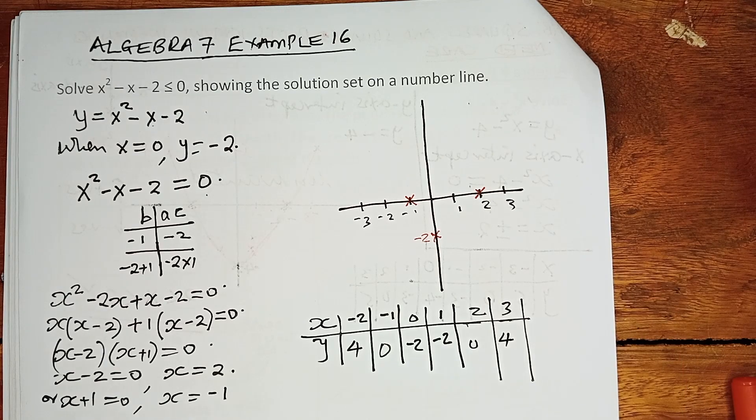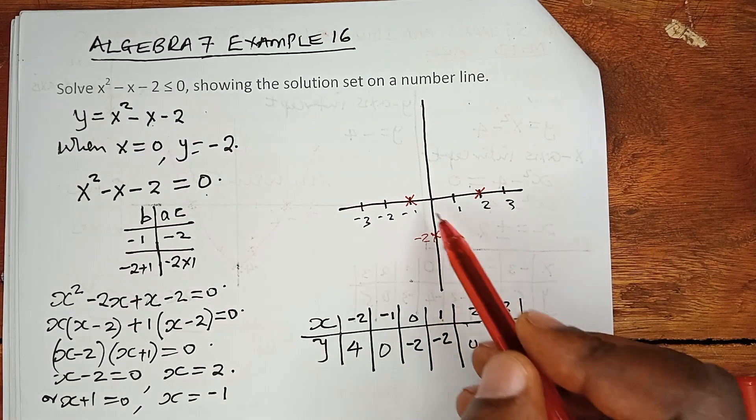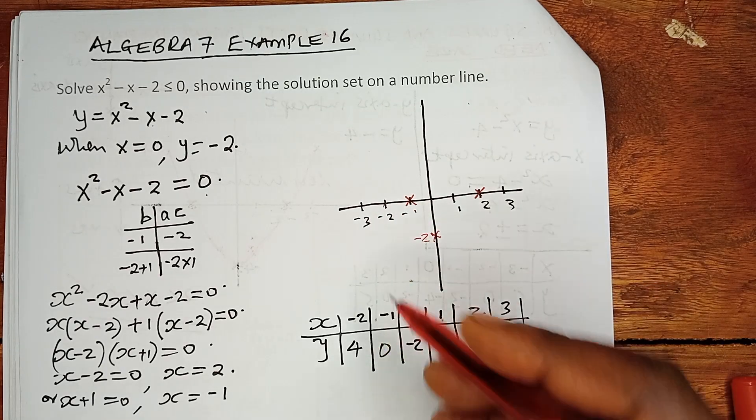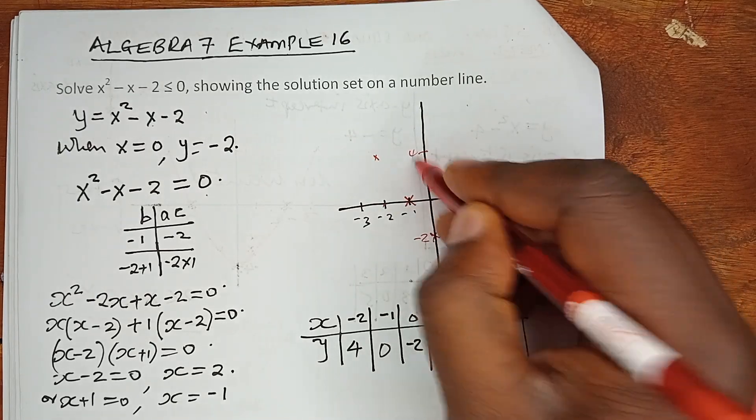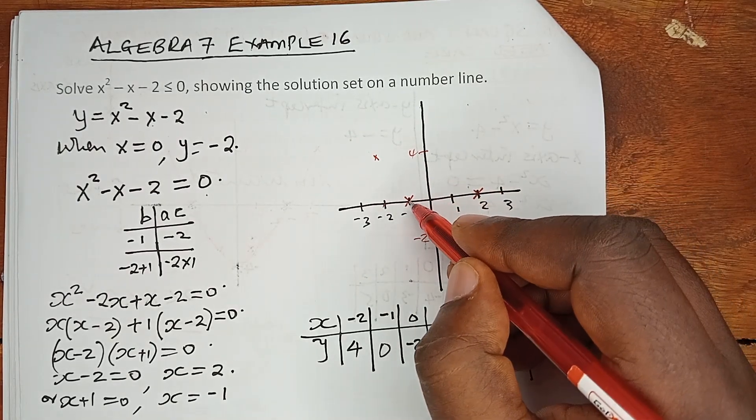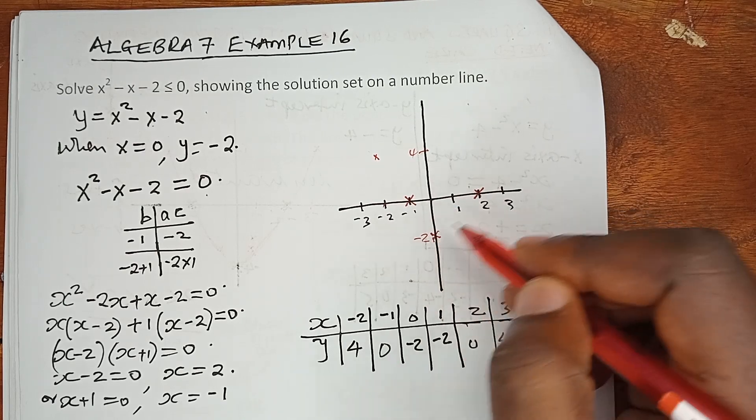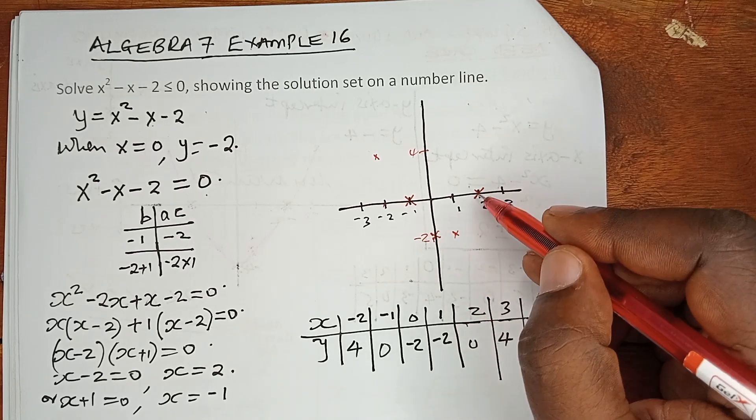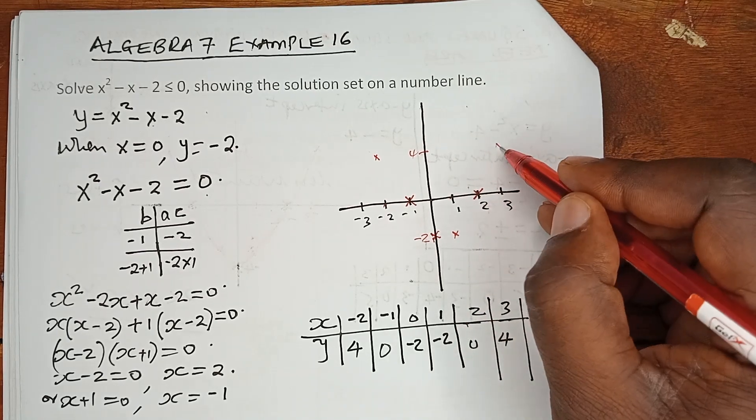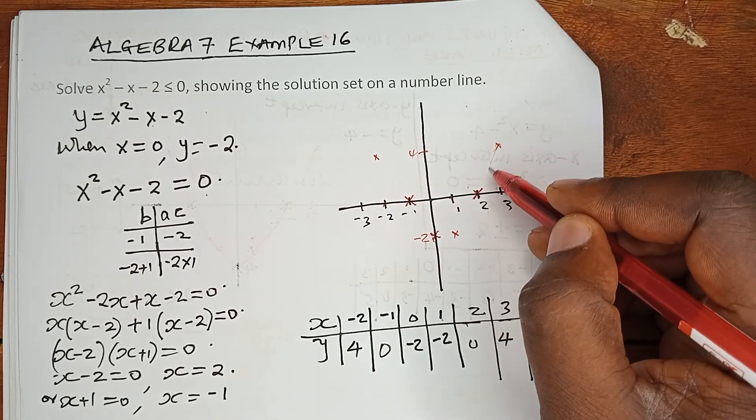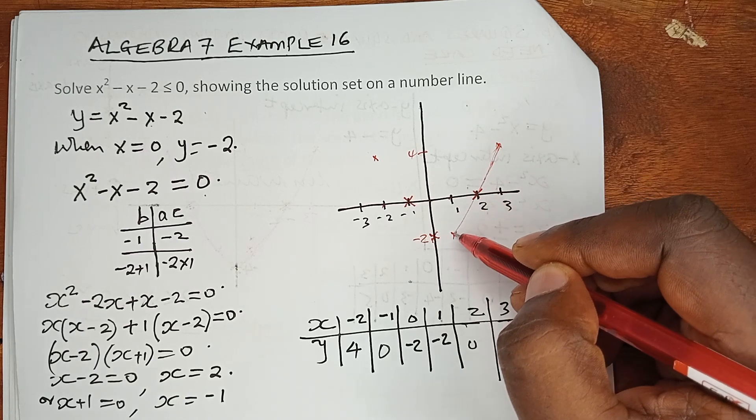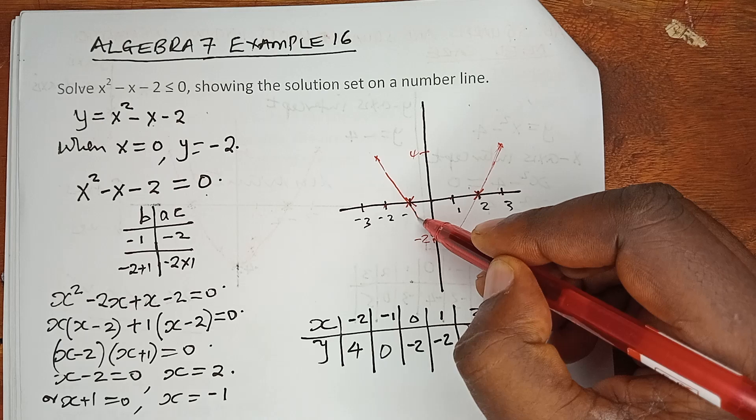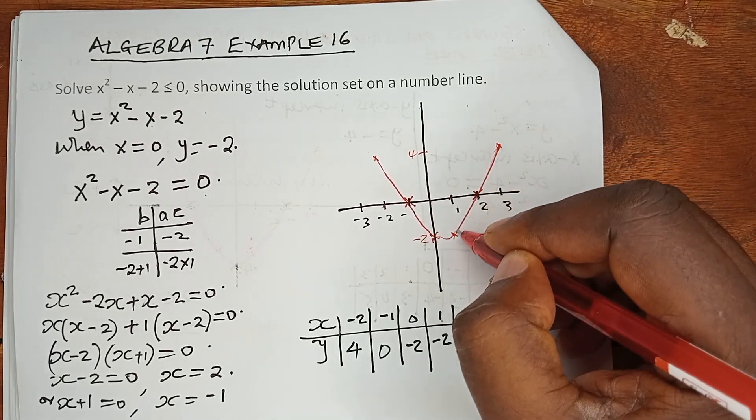Let us plot these points in the graph. When x is minus 2, we have y equals 4. Then 0, when x is 0, minus 2. When x is 1, another minus 2. When x is 2, 0. And when x is 3, we have 4. So we have to use freehand and construct a very smooth graph. There we are. That is our graph.